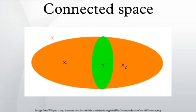The topologist's sine curve is an example of a set that is connected but is neither path connected nor locally connected. The general linear group GL(n) consists of two connected components: the one with matrices of positive determinant and the other of negative determinant; in particular, it is not connected. In contrast, SL(n) is connected. More generally, the set of invertible bounded operators on a Hilbert space is connected. The spectra of commutative local rings and integral domains are connected. More generally, the spectrum of a commutative ring R is connected if and only if every finitely generated projective module over R has constant rank, and R has no idempotents.